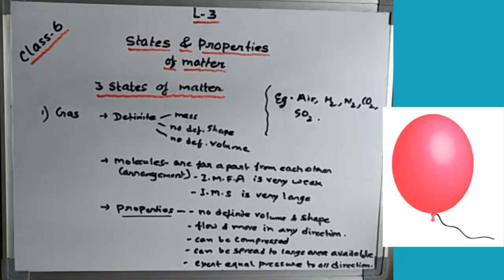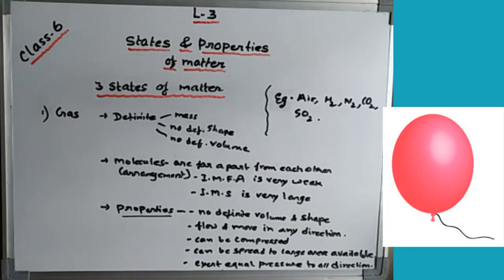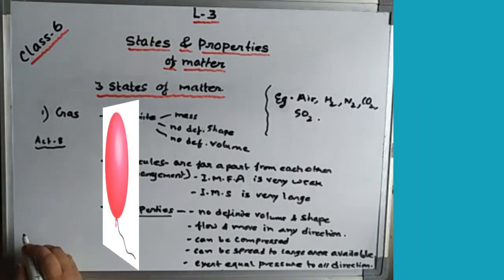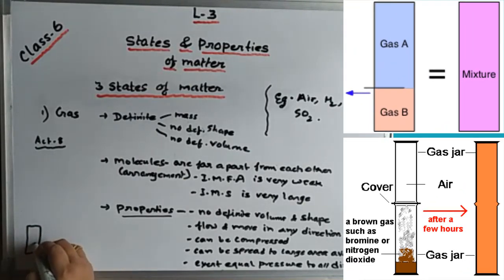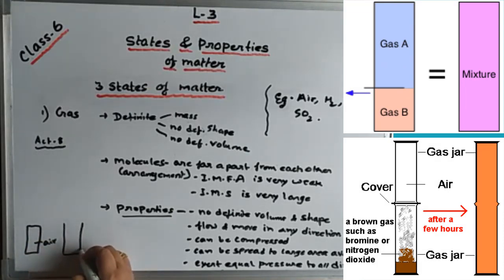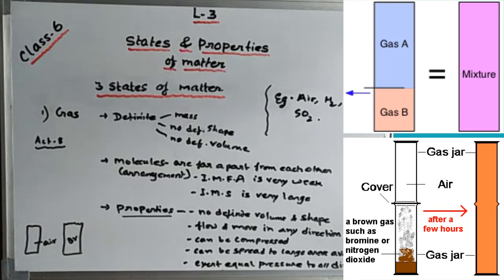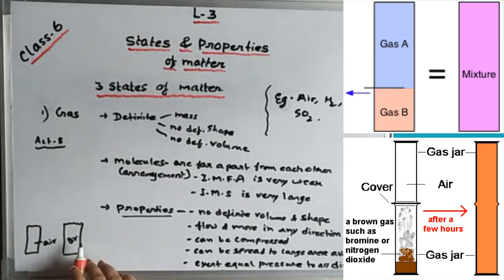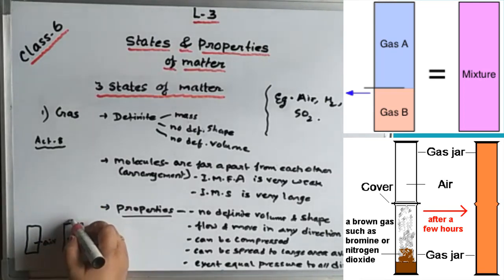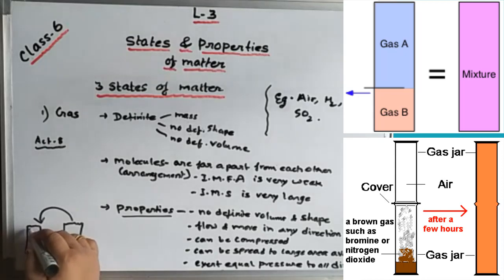This is shown in your book on page 25, activity 8, where three containers are taken. The first container is empty — meaning it is filled with air. The second container is filled with bromine gas, which is a light brown colored gas. When filled densely, it appears very dark brownish in color. We will place one jar on top of the other by opening the lids.